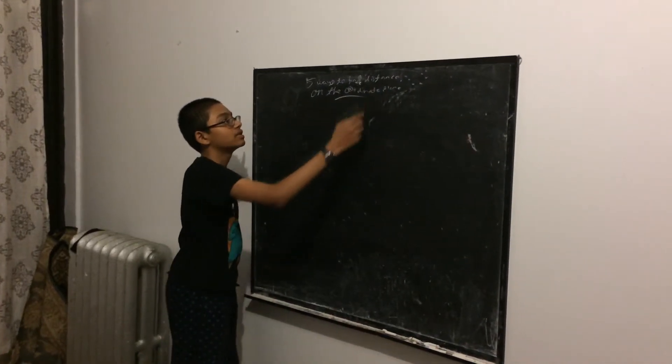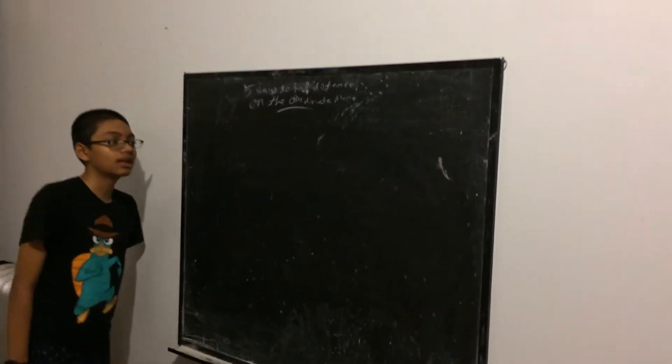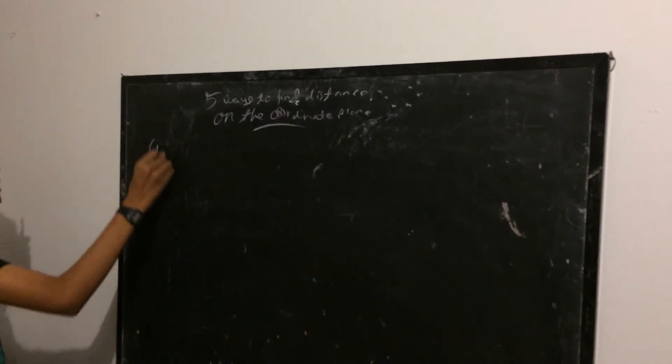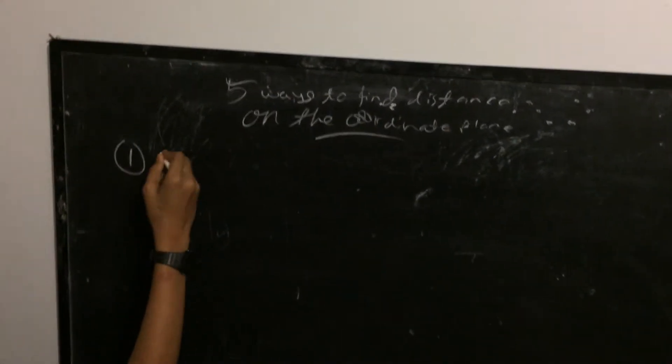To talk about five ways to find distance between two points on the coordinate plane. So the first way is obviously using the distance formula. So if you have two points...